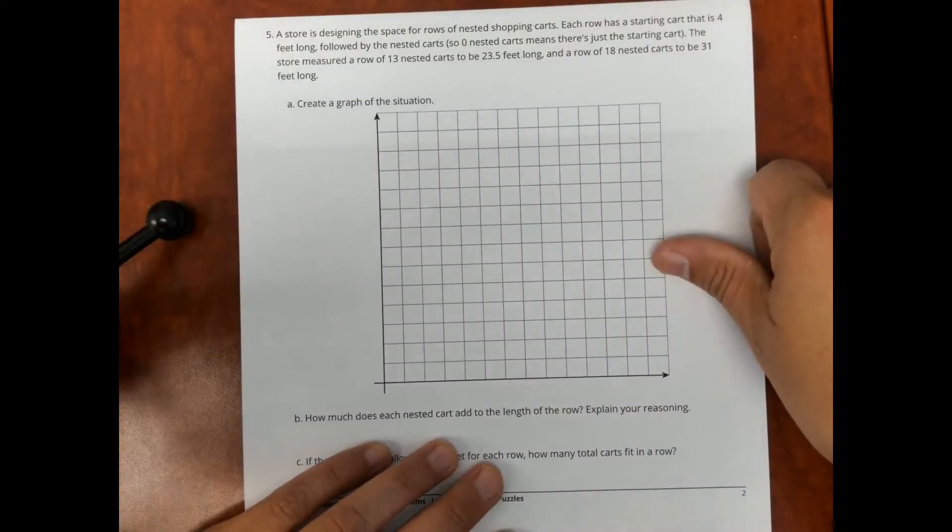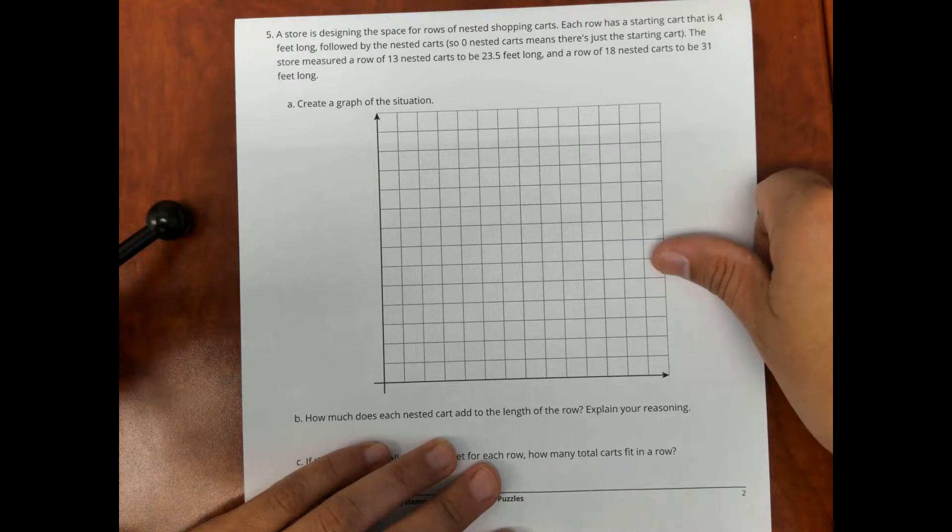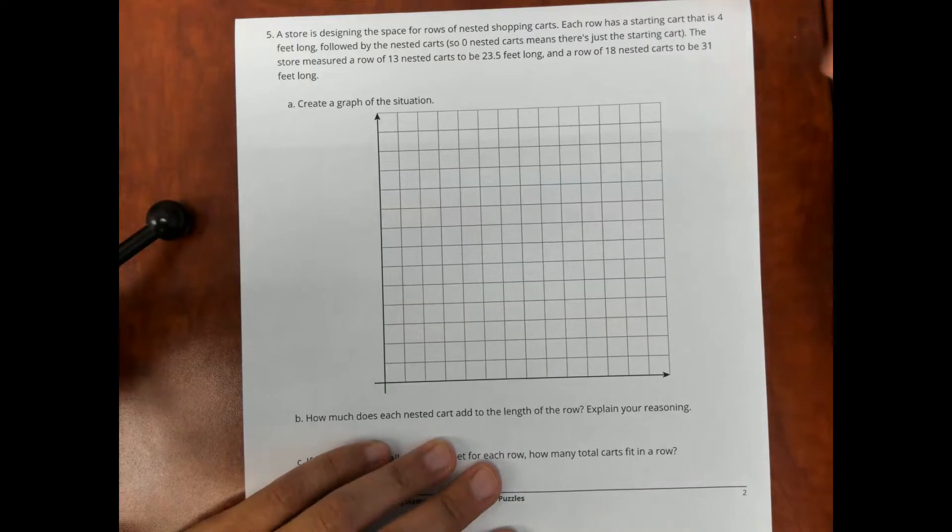A store is designing the space for rows of nested shopping carts. Each row has a starting cart that is 4 feet long, followed by the nested carts. So, 0 nested carts means that there is just a starting cart. The store measured a row of 13 nested carts to be 23.5 feet long, and a row of 18 nested carts to be 31 feet long.